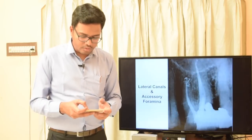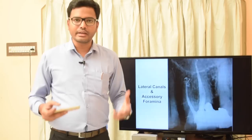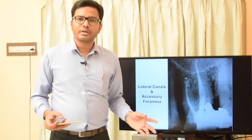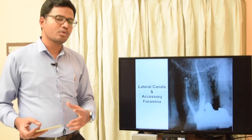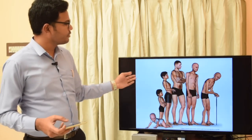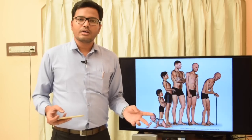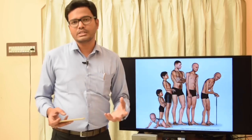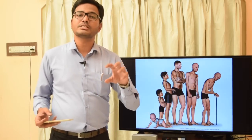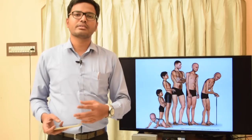In young permanent teeth where root apex closure hasn't occurred, root canal treatment can still be performed without hampering eruption, as shown in various studies. Root apex closure typically occurs two to three years after eruption of the tooth. Understanding eruption timing helps estimate root apex closure, which is essential for proper obturation, biomechanical preparation, and periapical healing in endodontic infection cases.